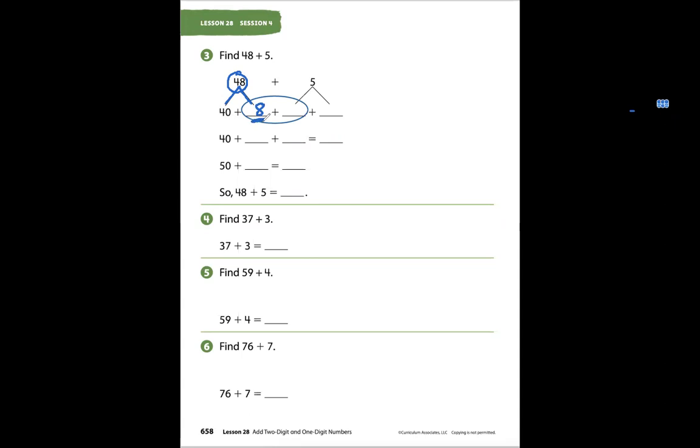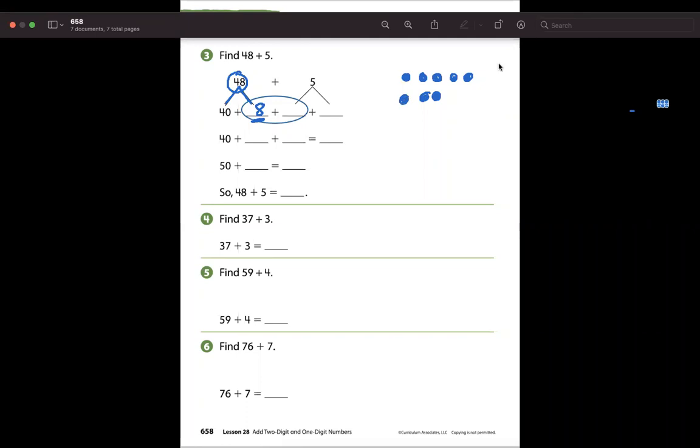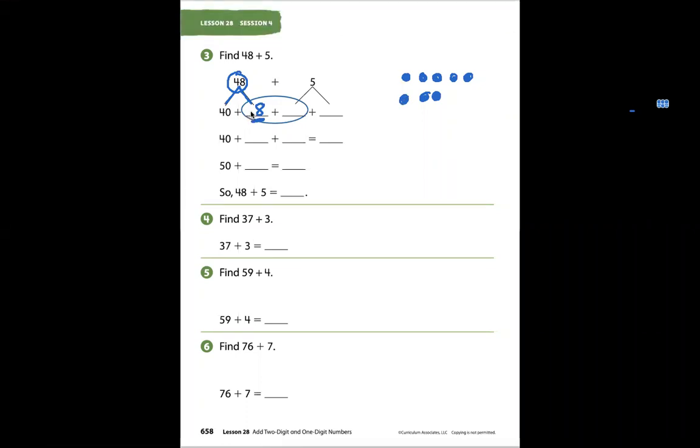Now if I think about the 8, I'm going to draw 8 dots: 1, 2, 3, 4, 5, new line, 6, 7, 8. If I can make 8 into a group of 10, it will be easier to add the rest. I have 5 more, but I only have 2 more spaces to make a group of 10.